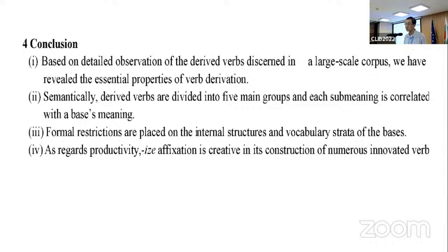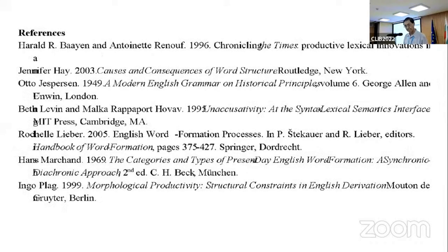Conclusion. Based on detailed observation of derived verbs in a large-scale corpus, we have revealed essential properties of verbalization. First, semantically, derived verbs are divided into five main groups and each is correlated with a base's meaning. Second, formal restrictions are placed on the internal structures and vocabulary strata of the bases. Third, as regards productivity, -ize suffixation is the most productive in its construction of new verbs. Thank you.